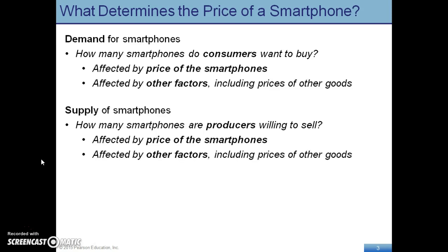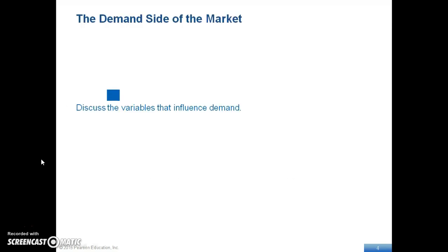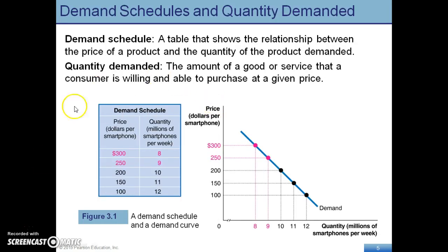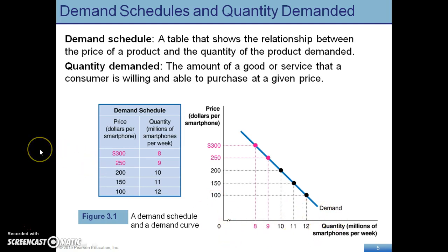When we look at Supply and Demand, you're going to notice that demand deals with buyers and supply deals with sellers. When we evaluate the demand side of the market, let's apply this to ourselves. Looking at this demand schedule, you'll notice the price of smartphones and the quantity of smartphones that people want at that price. As the price decreases, people want more smartphones — if the price goes from $300 to $250, people buy eight to nine smartphones. The difference in the amount they're purchasing is called Quantity Demanded, which is the amount of a good or service that a consumer is willing and able to purchase.